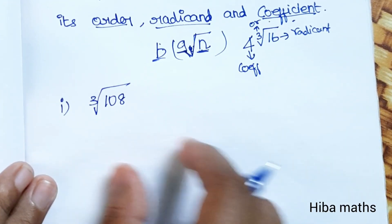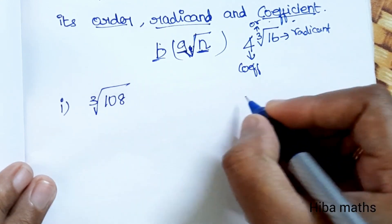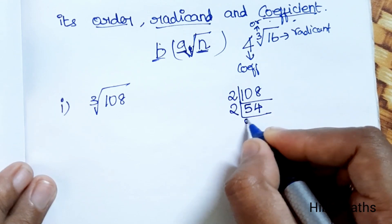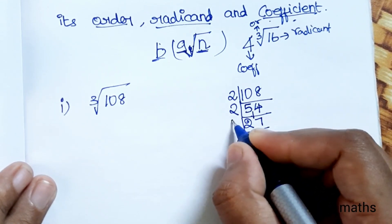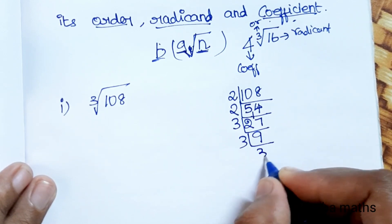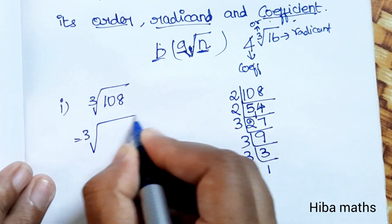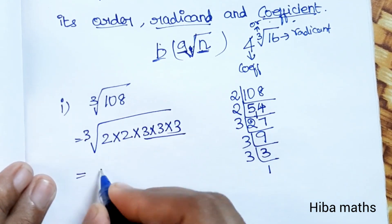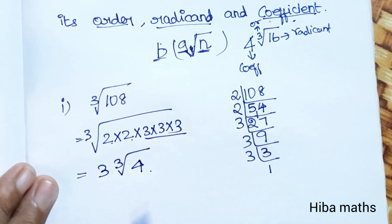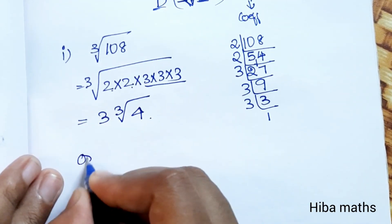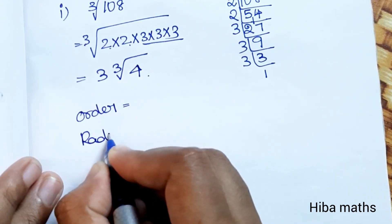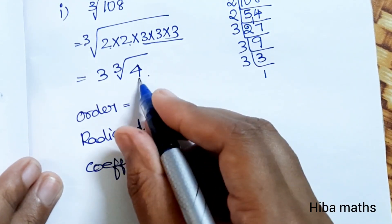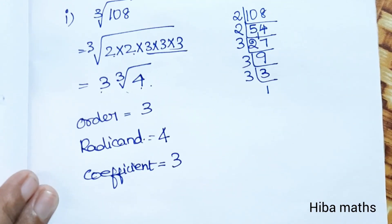Using the law of radicals, we factorize 108. The factorization gives us 2 × 2 × 3 × 3 × 3, so the cubic root of 2 × 2 × 3 × 3 × 3 equals 3 times the cubic root of 4. Order is 3, radicant is 4, coefficient is 3.